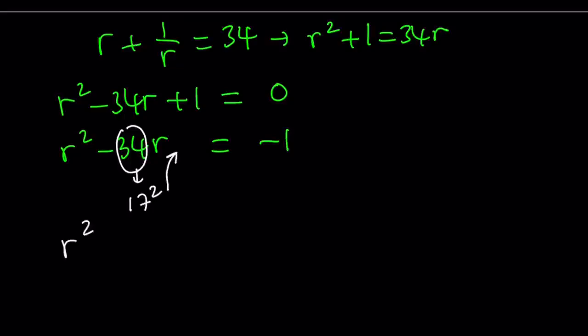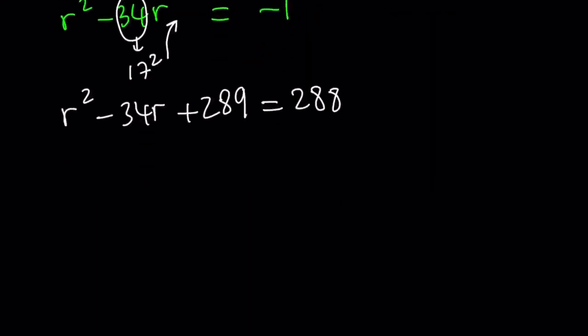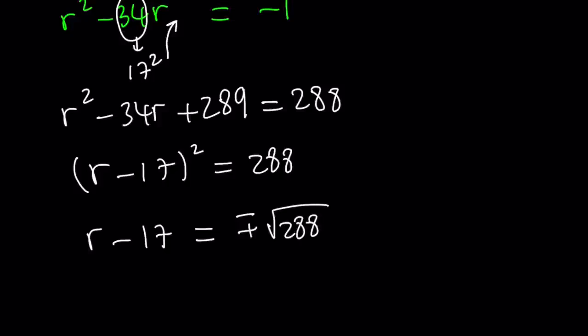So, we have to add 17 squared, which is 289 to both sides. But when you add negative 1 plus 289, you get 288. Great. So, the left hand side becomes r minus 17 squared and the right hand side is 288. If you take square roots, we're going to get r minus 17 equals plus minus the square root of 288, which can be written as 2 times 144. And then we can go ahead and write this as plus minus 12 root 2.